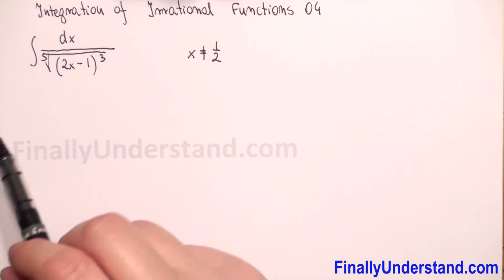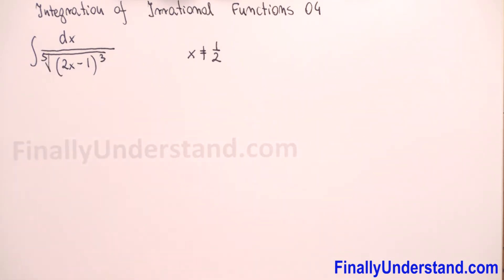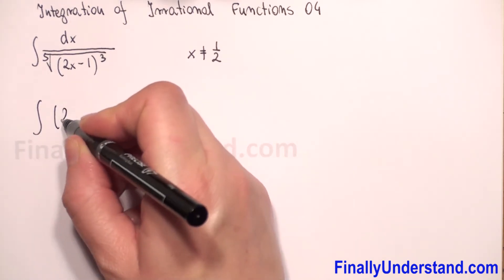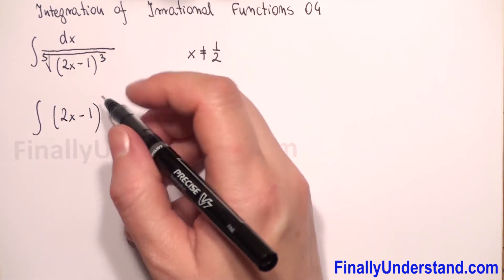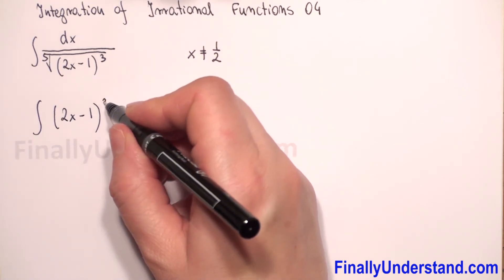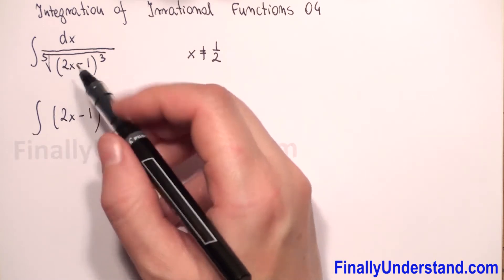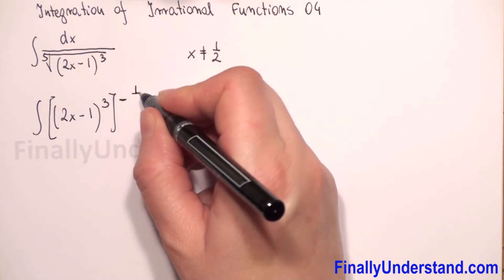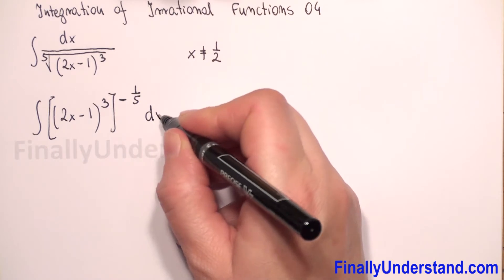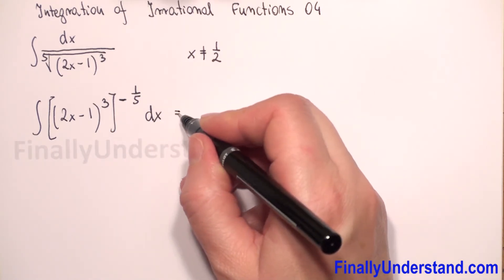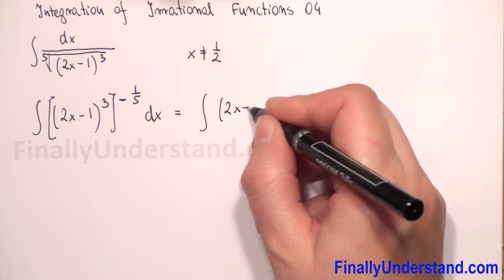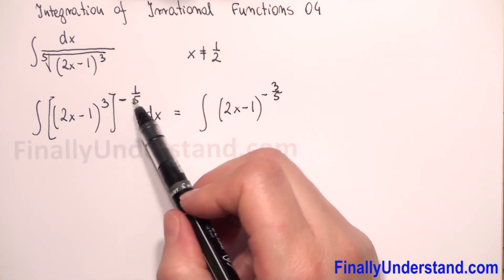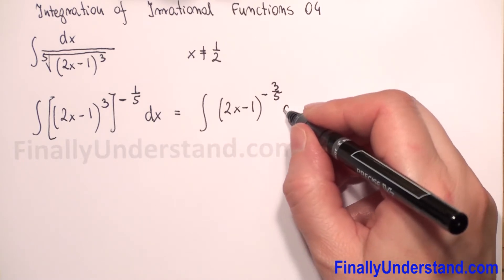Next, we will rewrite our fifth root as a power. Because we have this expression in the denominator, we need to put 2x minus 1 to power 3, and then because it is in the denominator, we put it to a negative power. With the fifth root as a power of one-fifth, we can rewrite the integral as (2x minus 1) to the power negative 3 over 5. When we have power to a power, we multiply the exponents.